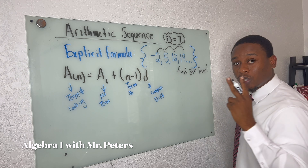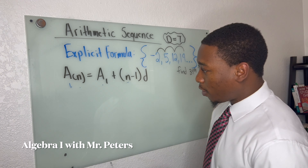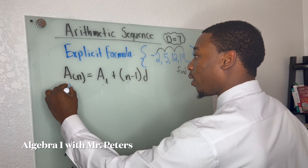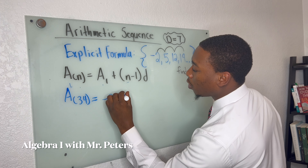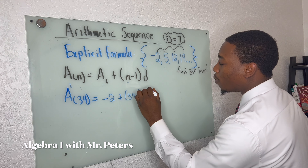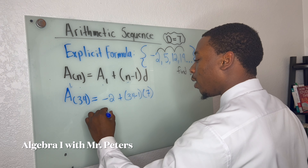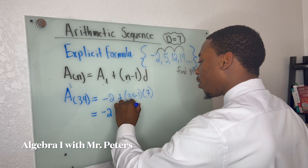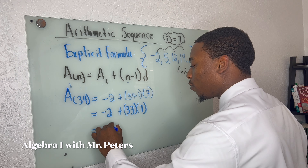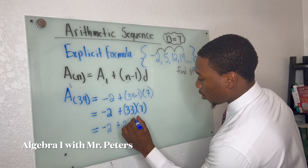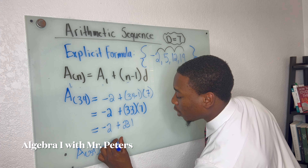I'm going to show you how to do that with two different methods. Our first method is to just substitute in nice and easy. So we're looking for the 34th term: a(34) is equal to our first term, negative two, plus 34 minus one, multiplied by the common difference of seven. Simplifying, we get negative two plus 33 times seven. We add negative two to positive 231, and we know that the 34th term in this sequence is 229.